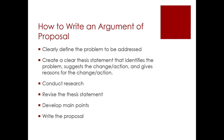How do you write an argument of proposal? You clearly define the problem to be addressed, create a clear thesis statement that identifies the problem, suggests the change or action, and gives the reasons for the change. Then conduct research and revise your thesis if need be. Develop your main points, which should be part of your thesis statement, and then write the proposal. The thesis statement with your clear assertion and main points is half the battle.